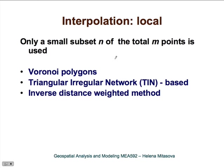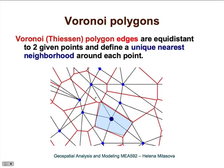Let's start with the simplest methods: Voronoi polygons, linear interpolation on TIN, and inverse distance weighted method. Voronoi polygons create a unique nearest neighborhood around each point, and the edges of this neighborhood are defined as equidistant to two given points.